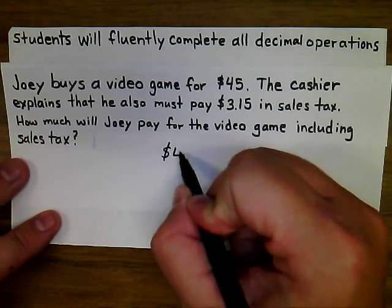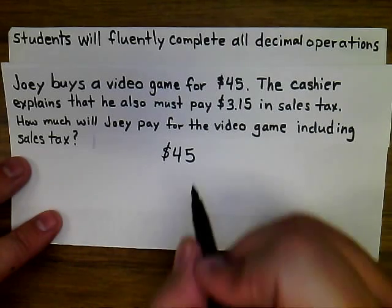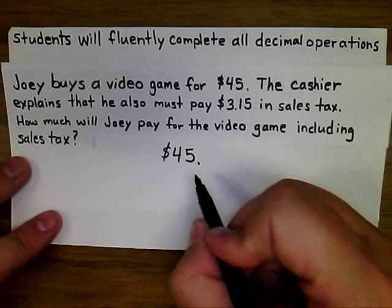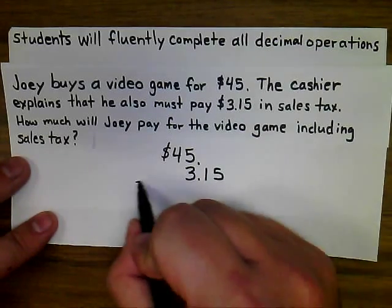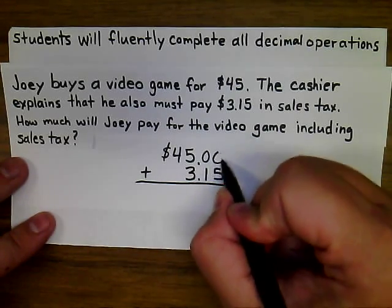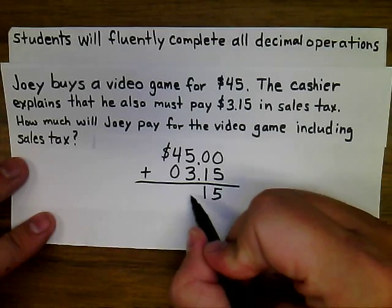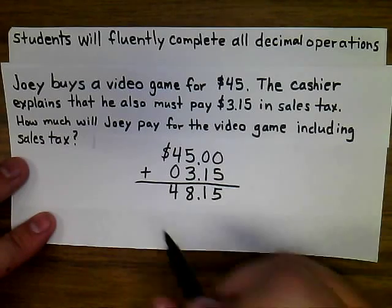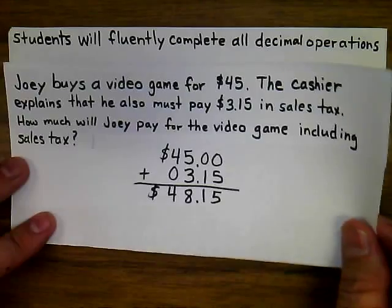The dollar amount $45 — even though a decimal point might not always be shown — has its decimal point at the end of the number. When we add the $3.15, we need to line up that decimal point. It's also helpful to hold unused place values with zeros. We then add and bring the decimal point straight down into our sum. Joey will spend $48.15 on his video game.